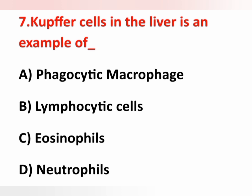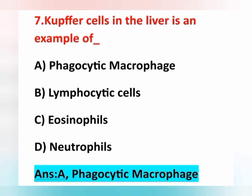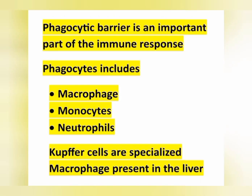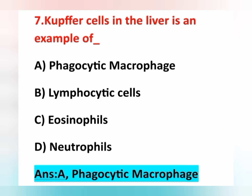Seventh question: Kupffer cells in the liver are an example of? Options are: option A, phagocytic macrophage; option B, lymphocytic cells; option C, eosinophils; option D, neutrophils. The correct answer is option A, phagocytic macrophage. The phagocytic barrier is an important part of the immune system; phagocytes include macrophages, monocytes, and neutrophils. Kupffer cells are specialized macrophages present in the liver, playing an important role in the immune system.